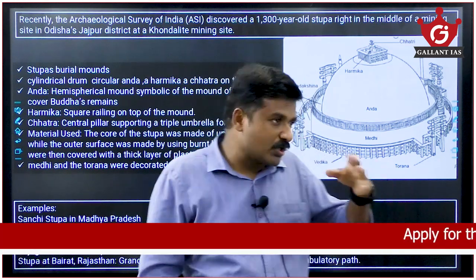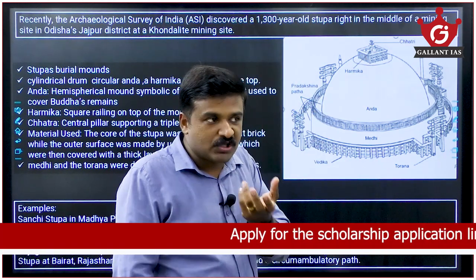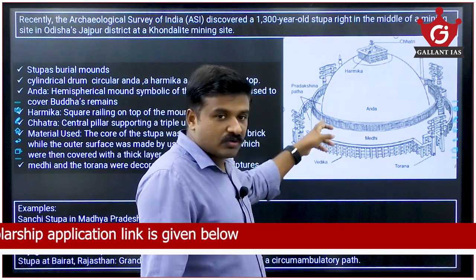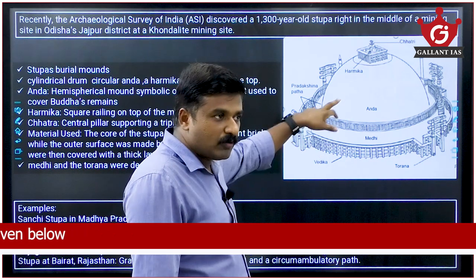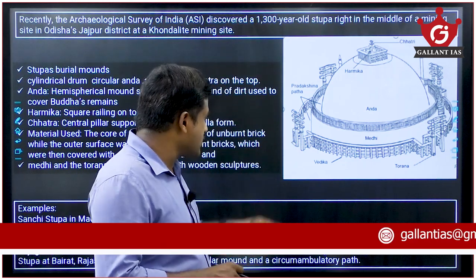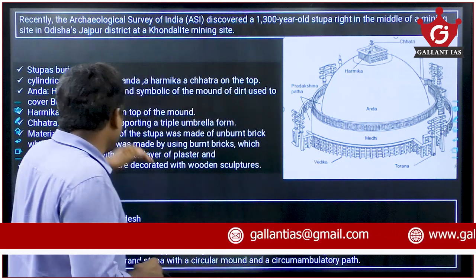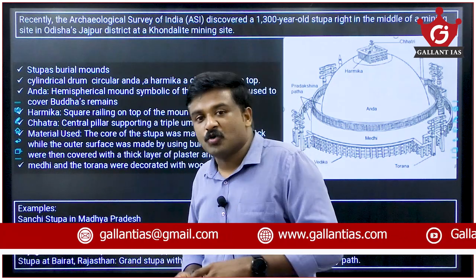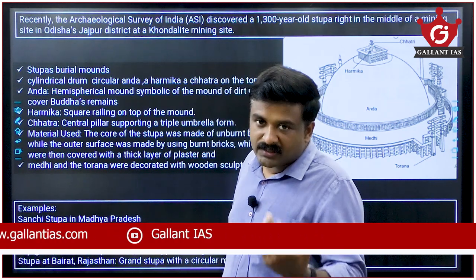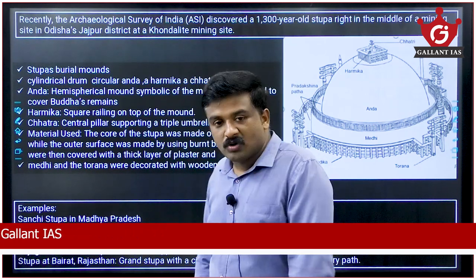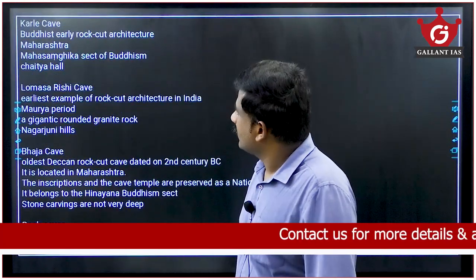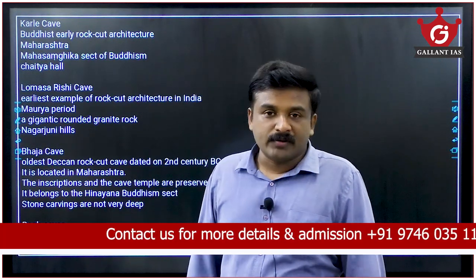A stupa is a burial mound — a cylindrical drum topped by a circular Anda. It has a Harmika (a square platform symbolizing a sacrificial altar), and a Chattra or Chatri symbolizing the three jewels of Buddhism — Buddha, Dhamma, and Sangha. The Medhi is the circumambulatory terrace where devotees walk around the stupa as an act of worship (Pradakshina). Torana are gateways at the four cardinal directions, and Vedika are the railings. UPSC can ask which of the following is or is not part of stupa architecture.